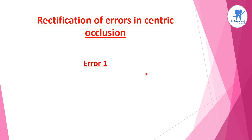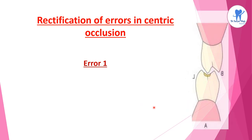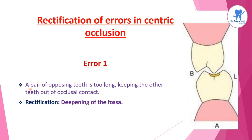Coming to the rectification of errors in centric occlusion — this picture shows the correction for Error 1. When a pair of opposing teeth is too long, keeping the other teeth out of occlusal contact, the rectification is by deepening the fossa. So for teeth that are too long, fossa deepening is the rectification.